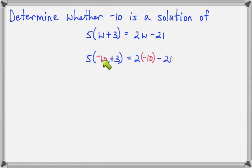Okay, now you have a choice. Some people want to distribute the 5, and some people want to work what's inside the parentheses first. And good news, either way works just the same. So let's do negative 10 plus 3 adds up to negative 7. And now let's come over here.